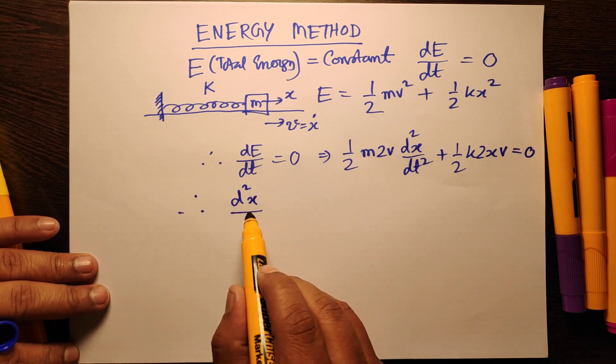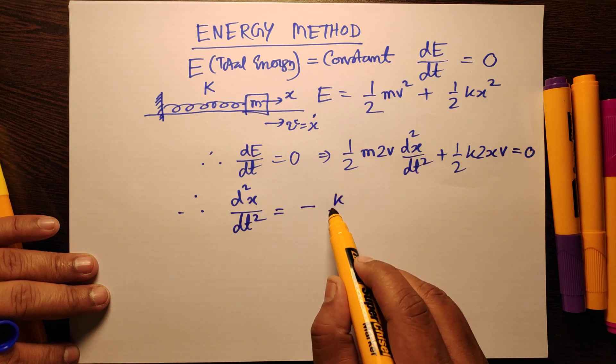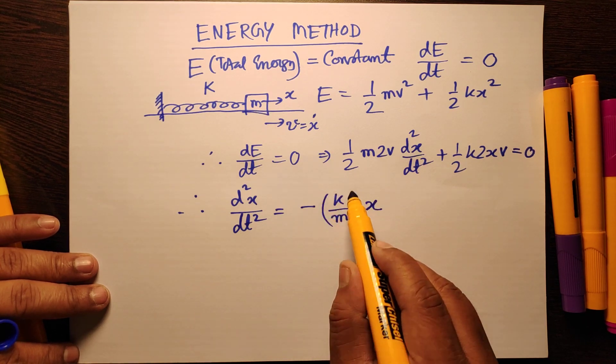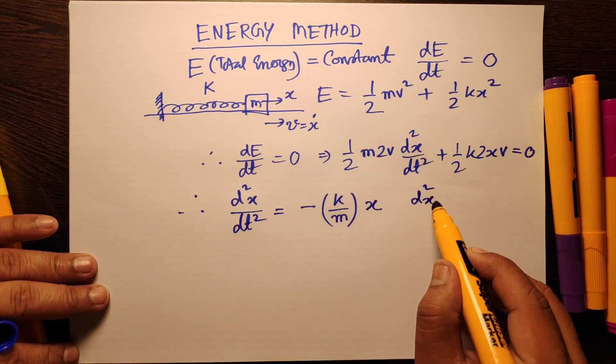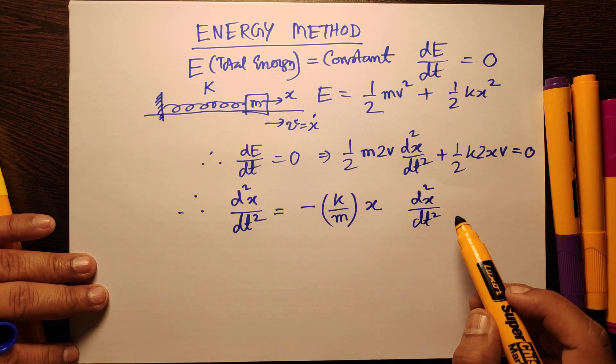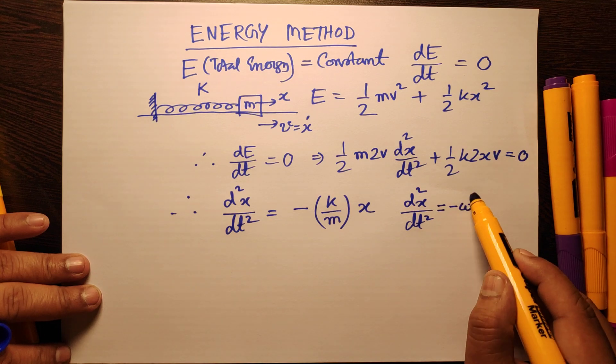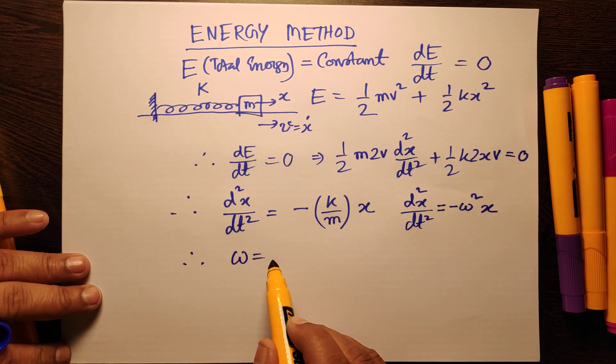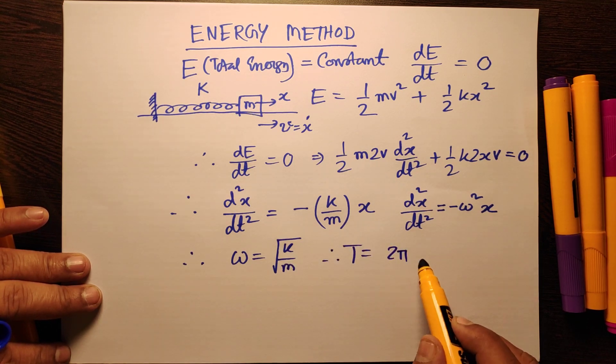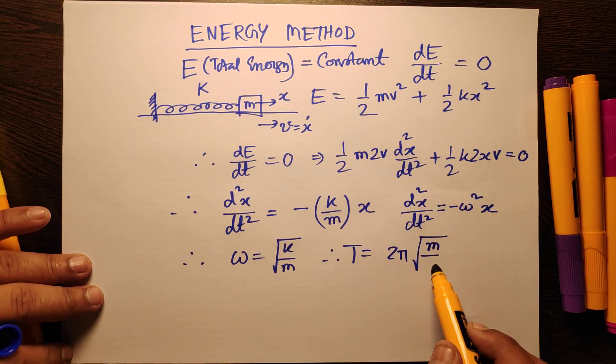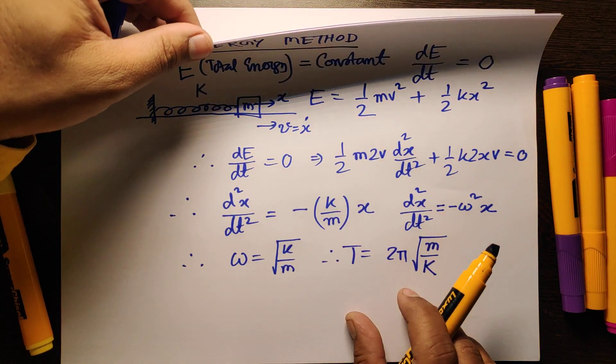From here you get the expression d²x/dt² equal to minus (k/m)x. Again this is equivalent to the basic differential equation from which we have solved: d²x/dt² is minus ω²x. Omega is √(k/m) and hence the time period is 2π√(m/k).